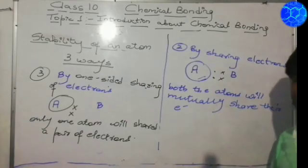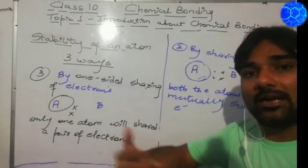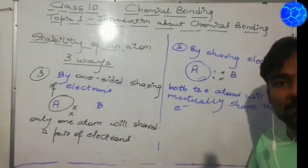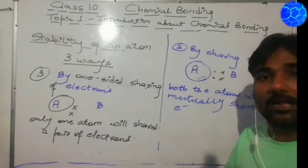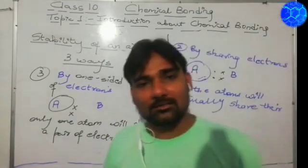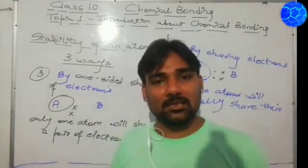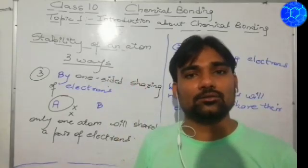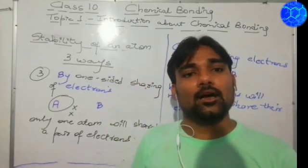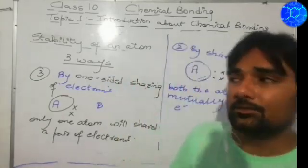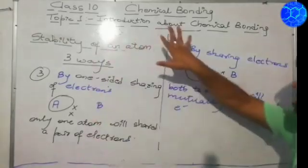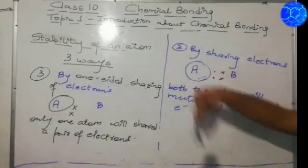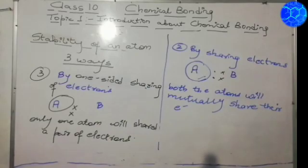One more thing: why does an atom require stability? Because an atom requires stability to have eight electrons or two electrons in their outermost shell. So this is the introduction about chemical bonding regarding the stability of an atom.